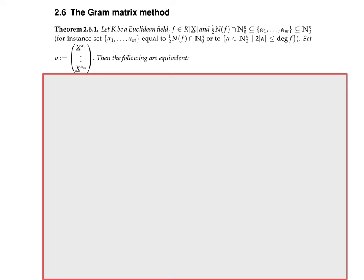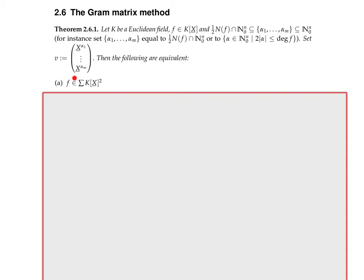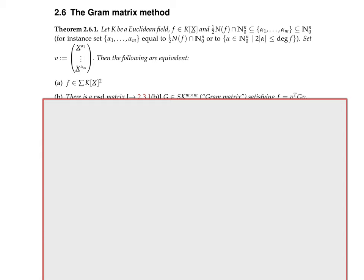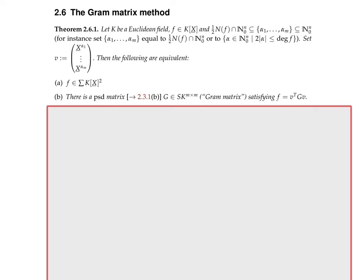So why would it be really good if it were a sum of squares of polynomials? One of the reasons is that we have very good methods of searching for such a representation. Today we want to learn one of these methods, namely the Gram matrix method, and that can be combined with a Newton polytope.